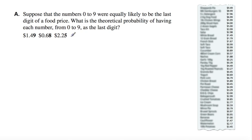Part A: suppose that the numbers 0 to 9 were equally likely to be the last digit of a food price. What is the theoretical probability of having each number from 0 to 9 as the last digit? Here's your price, and there is your list of food prices. So theoretically, 0 to 9 is 10 numbers, so theoretically, if they're all equal, it will be 1 out of 10.